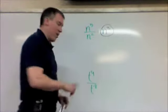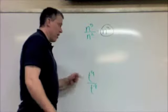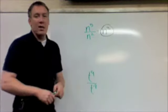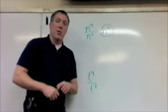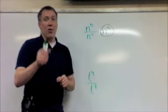I want you to try it here with a little bit more complicated one. t to the ninth divided by t to the negative eight. Remember, when you're doing this, when you subtract the negative, you're really adding.